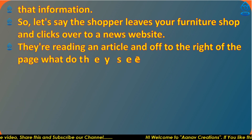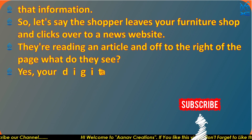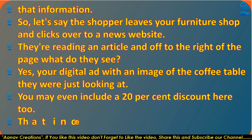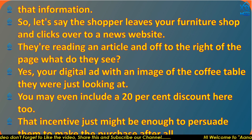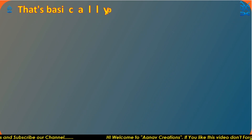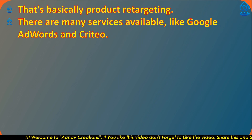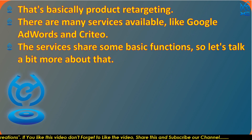So let's say the shopper leaves your furniture shop and clicks over to a new website. They are reading an article, and off on the right of the page — what do they see? Your digital ad with an image of the coffee table they were just looking at. You may even include a 20% discount. That incentive might be just enough to persuade them to make the purchase after all. That's basically product retargeting. There are many services available, like Google AdWords and Criteo — these services share some basic functions.